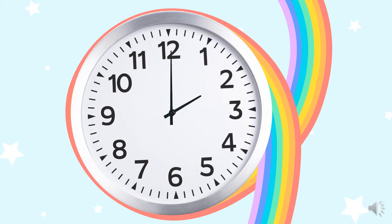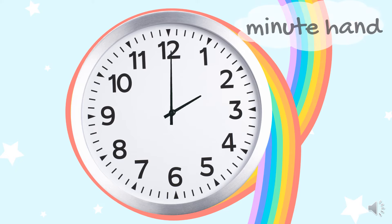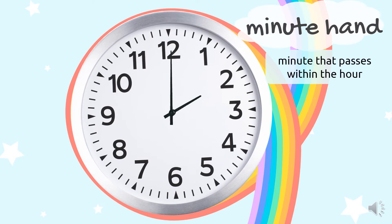We have a short hand and a long hand on our clock. We learned just now that the short hand is called the hour hand, and it tells us what the hour is. But do you know what the long hand does? The long hand is called the minute hand. It indicates each minute that passes within the hour.